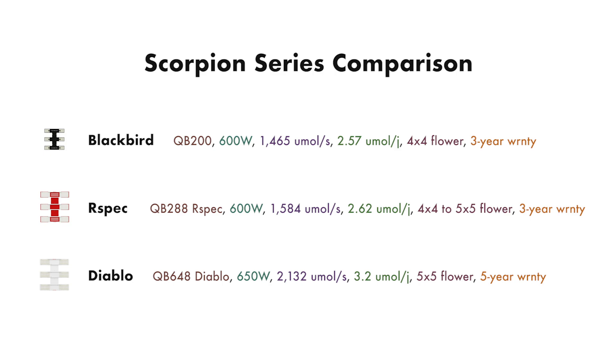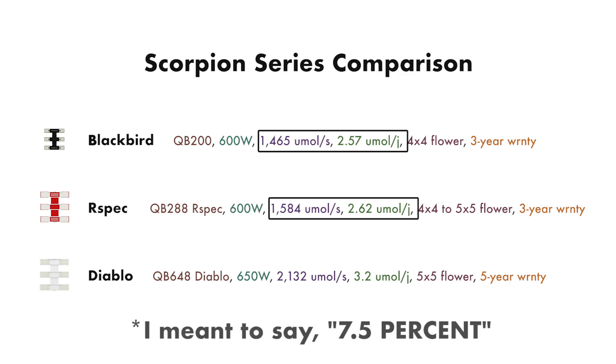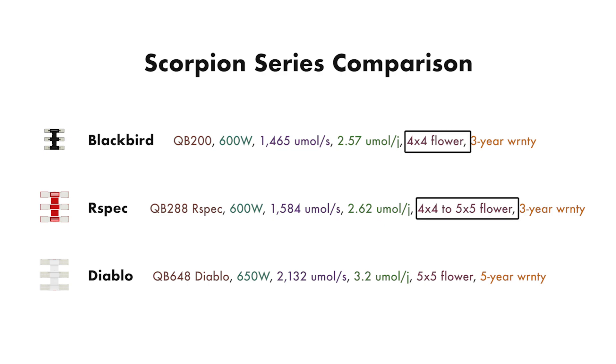The Blackbird and Scorpion R-Spec draw the same amount of wattage and therefore put out the same amount of heat. The R-Spec puts out about 7.5% more light and is 2% more efficient. Both of these lights would sufficiently flower a 4x4 area. At this time the R-Spec is $200 or 20% more expensive.